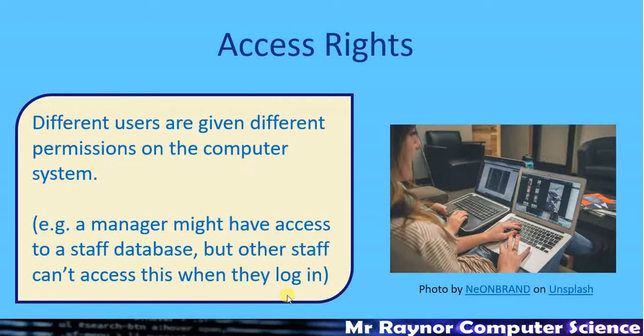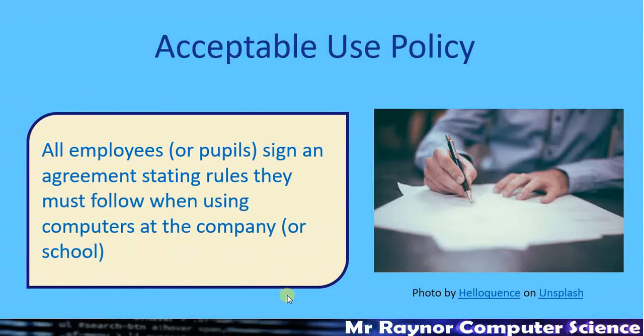Access rights means different users within a company can be given different permissions. In school, your teacher might have access to change people's usernames and passwords, whereas a pupil wouldn't. Access rights gives different people different rights to access parts of the system. Technicians in a school or company will have full access and can install software, but most staff won't have that access.